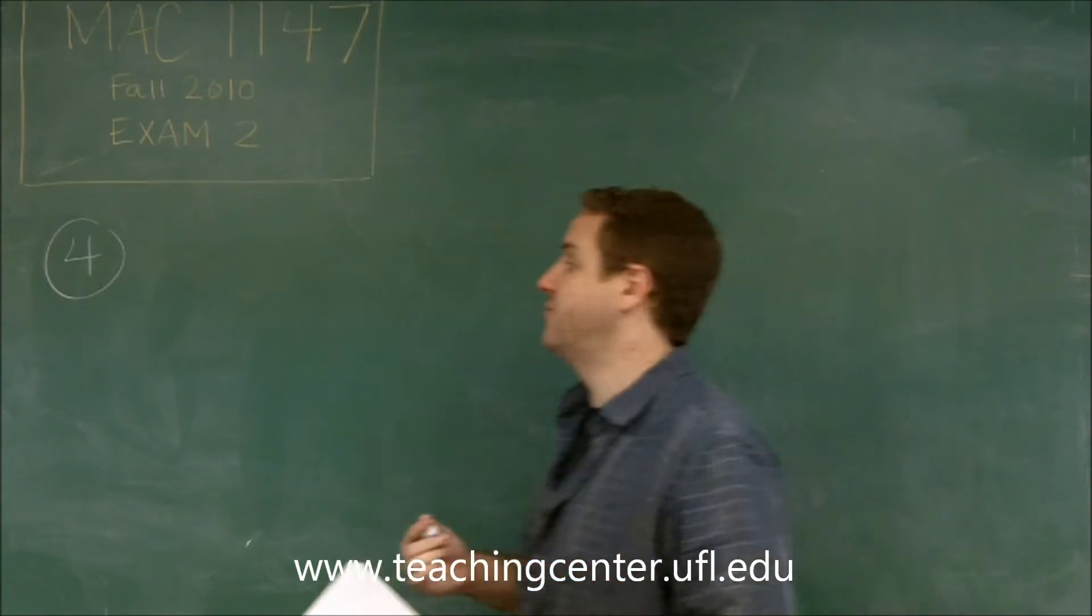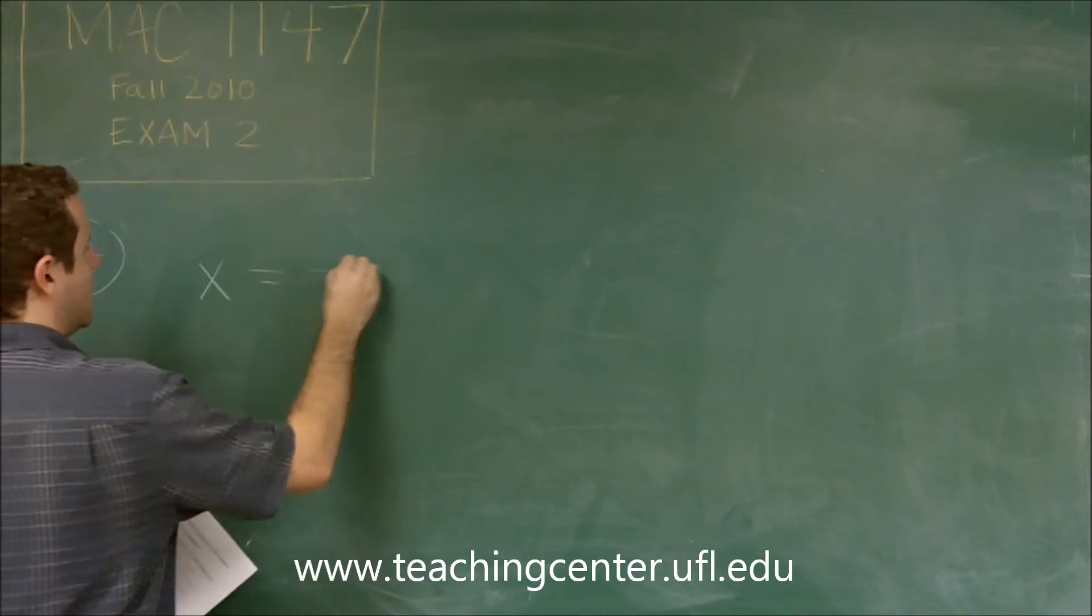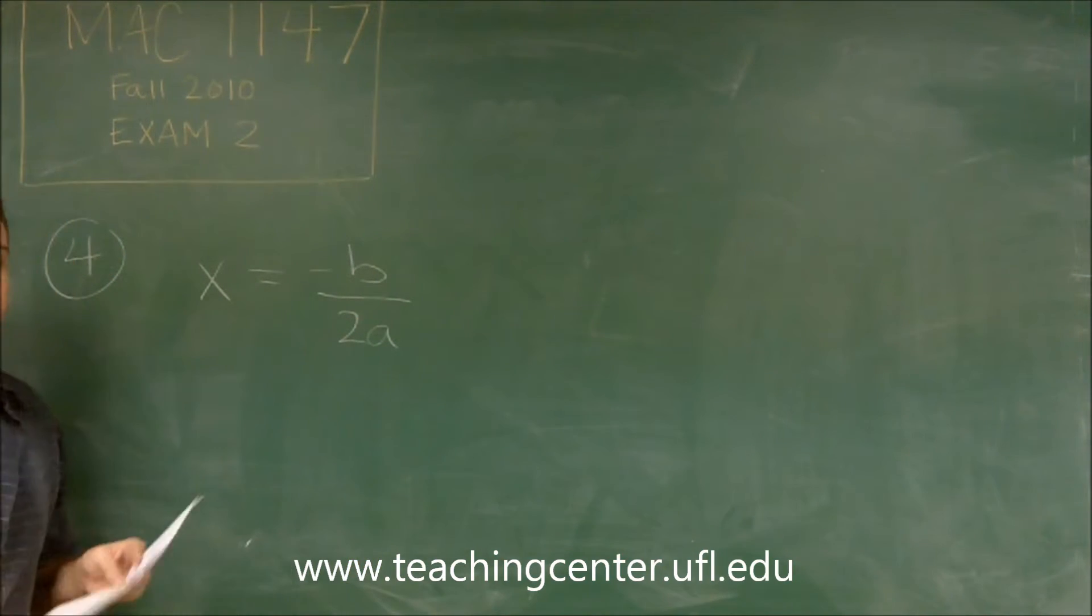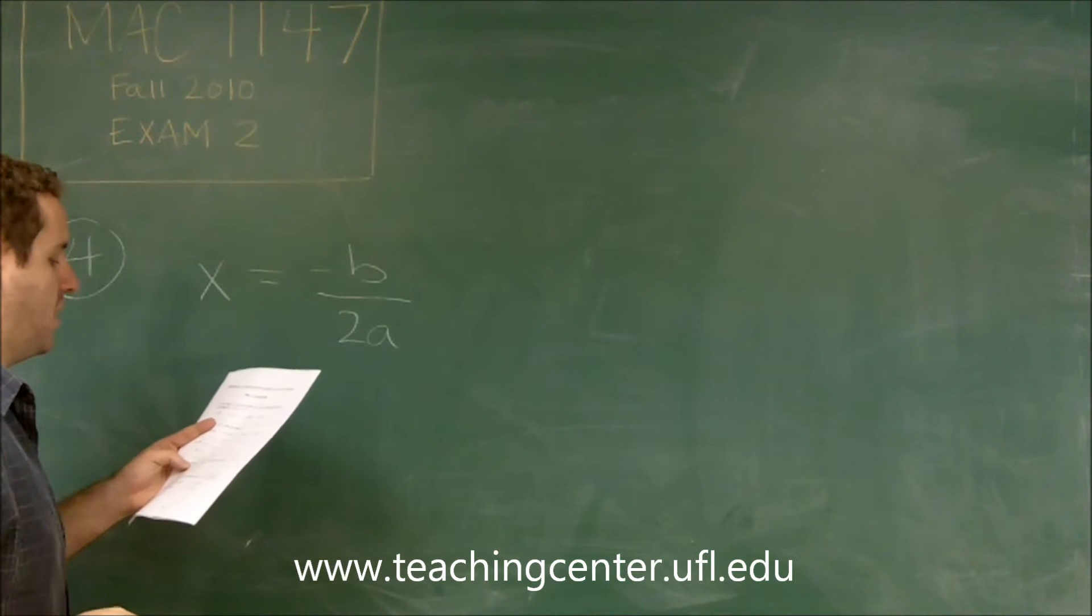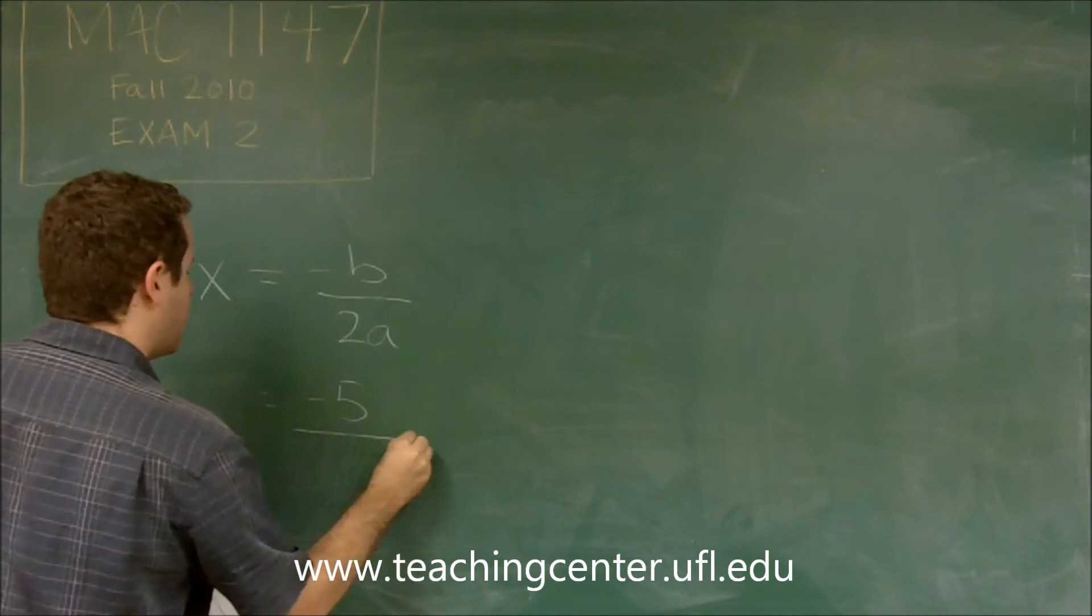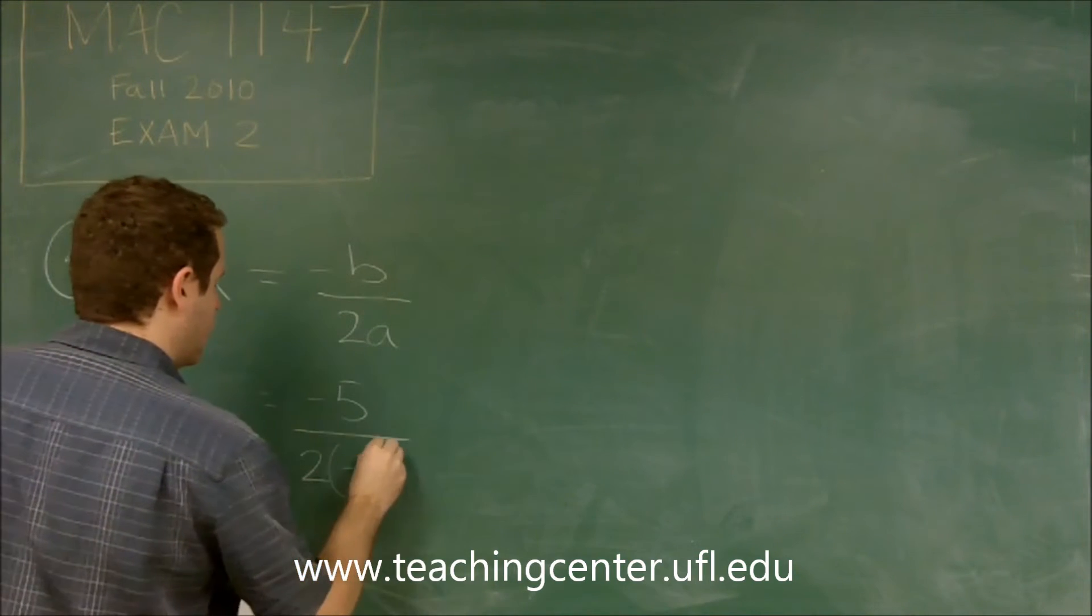So what we're going to use here is the vertex formula: our x value for our vertex is negative b over 2a. So in this function, our b is 5, so we get negative 5, 2 times our a. Our a is negative 1 fourth.